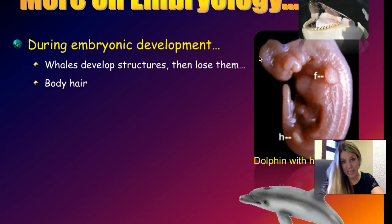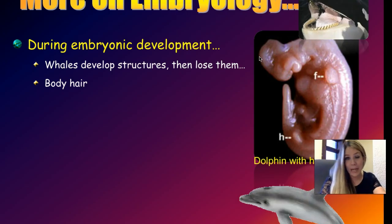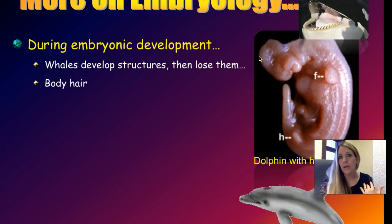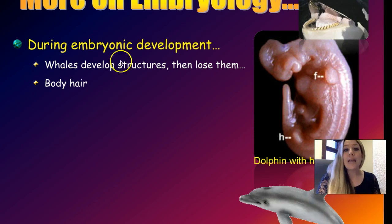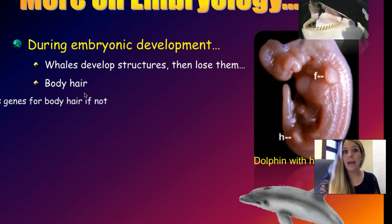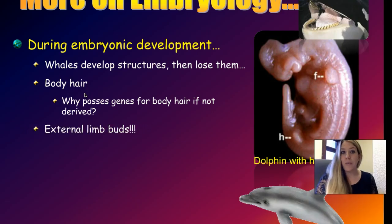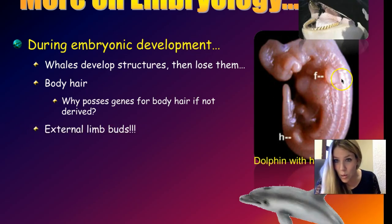During the development of whale embryos, they get structures that would have been present in their ancestral species — land mammals — and then they lose them before birth. It's just like how we humans develop a tail and then lose it before we're born. For example, whales as embryos develop body hair and external limb buds.